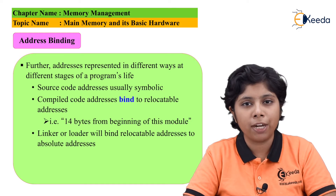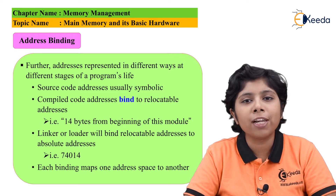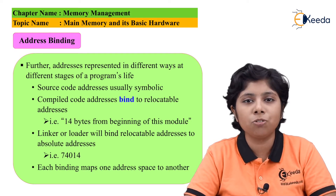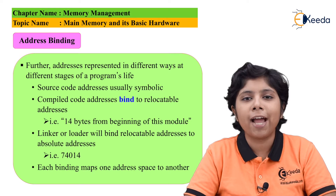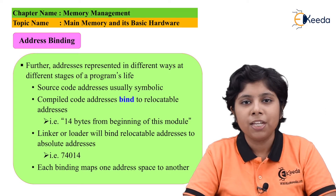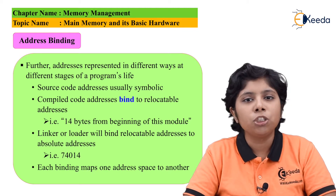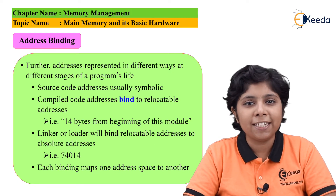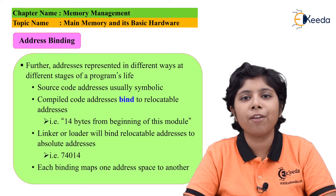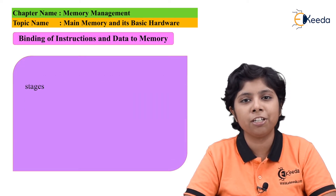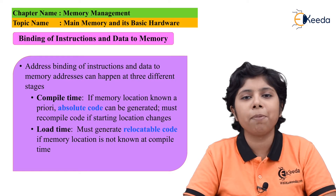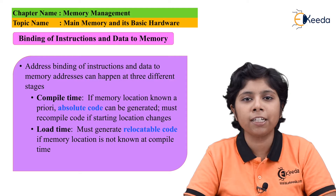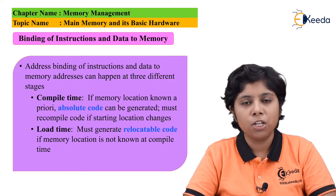This can be done using two types of registers: first, the base register, which contains the smallest physical address that can be provided to a process; and second, the limit register, which contains the size of the range the process can legally access. For example, if the base register contains 2024 and the limit register contains 500, then the entire accessible address range is from 2024 up to 2024 plus 500 minus one.